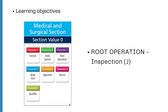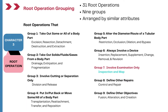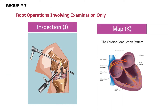At the end of this learning session, we will have a better understanding of coding the root operation Inspection from the seventh group of root operations. The Medical and Surgical section is the most important and biggest section in ICD-10 PCS, with a total of 31 root operations divided into nine groups based on similar attributes. Today we are looking at the seventh group, which covers root operations involving examination only.